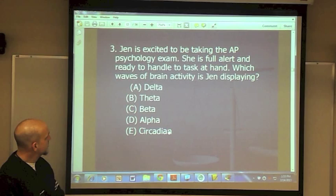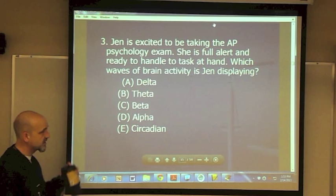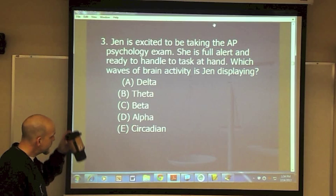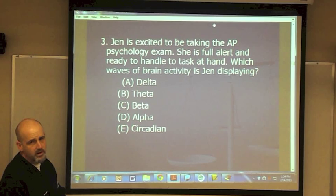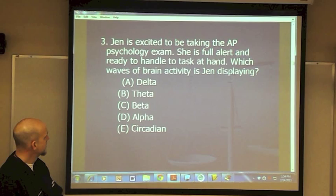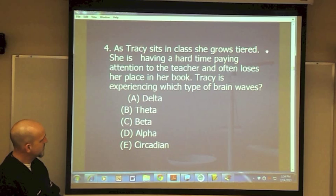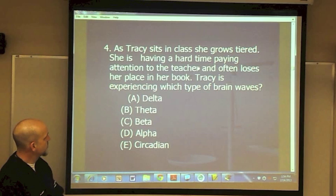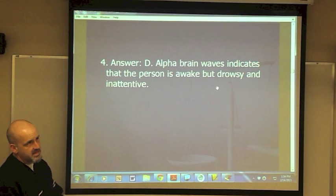Example question: Jen is excited to take the AP Psychology exam, fully alert and ready. Which brainwave is she displaying? Wide awake — that's beta waves. Another question: Tracy sits in class, grows tired, has a hard time paying attention and loses her place in her book. That's alpha waves — awake but drowsy. Theta waves would mean she's pretty much in stage one sleep, which we'll get to in a moment.